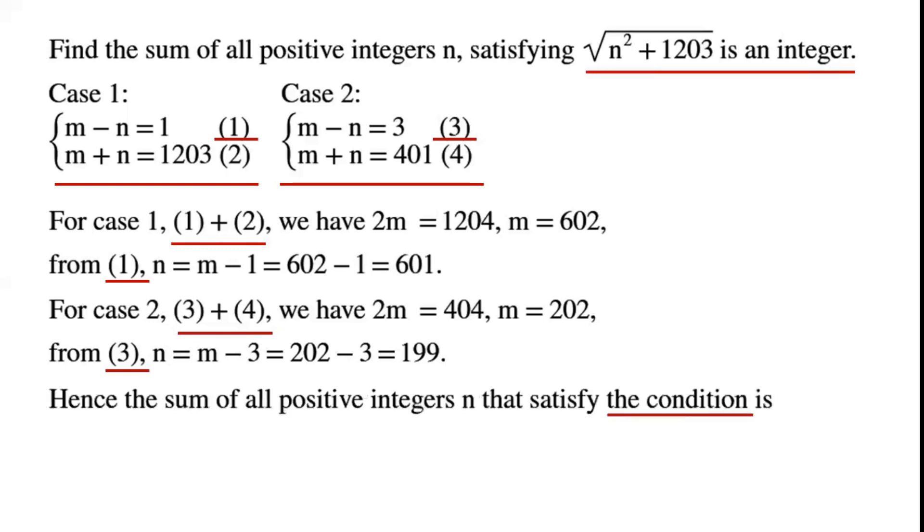Hence, the sum of all positive integers n that satisfy the condition is 601 + 199 = 800.